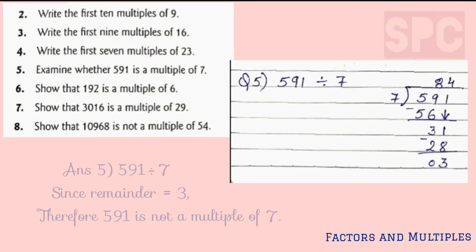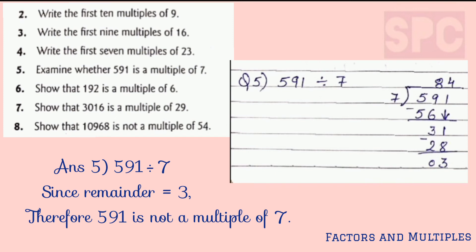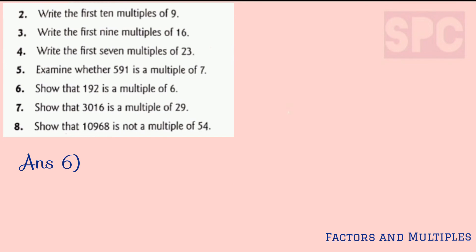Question number 5: examine whether 591 is a multiple of 7 or not. The procedure is the same — divide 591 by 7 and see what you get in the remainder. After dividing 591 by 7, we get 3 in the remainder. Since we have not got 0 in the remainder, 591 is not a multiple of 7.